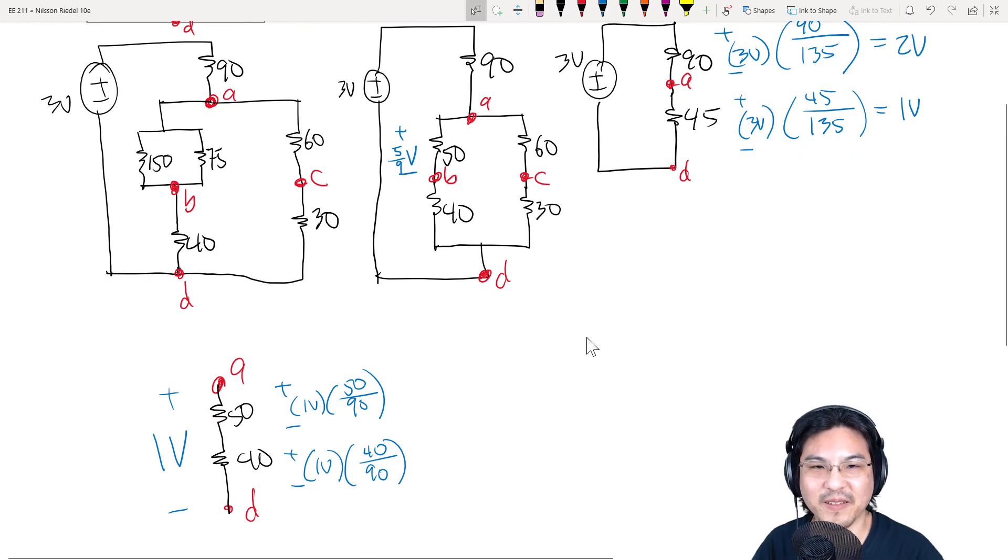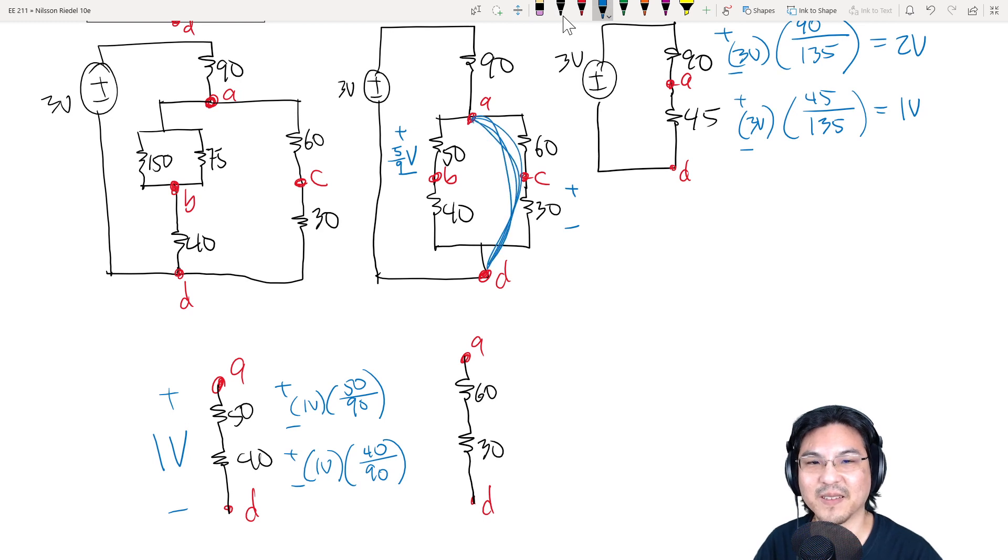Okay, and then we want the voltage right here. And then again, A to D. Let me draw it over here. Here's A, here's D. And we got the 60 ohm, 30 ohm. We just said, right? Here to A to D, here to here is 1 volt. Here to here is 1 volt.